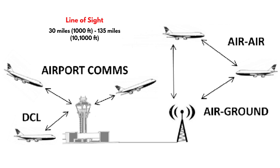Or about 135 miles with an aircraft operating at 10,000 feet. This system operates between the frequency range of 118 megahertz to 137 megahertz. However, the channel spacing has been reduced from 200 kilohertz to 8.33 kilohertz in most countries, which has enabled the ability to triple the number of usable frequencies.